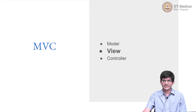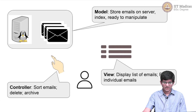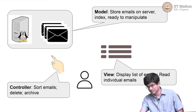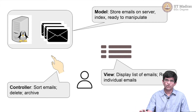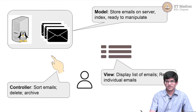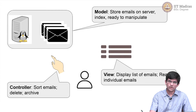What we are doing here is looking at the view part of the model view controller. Let us quickly recap what this is. The overall structure of a web app, or in fact any graphical user interface based application, can be thought of as having three components.